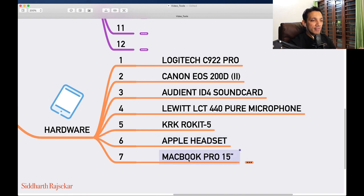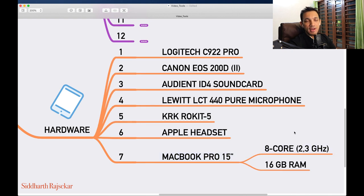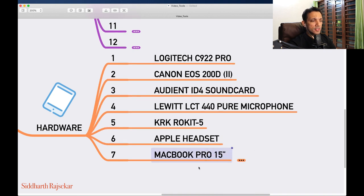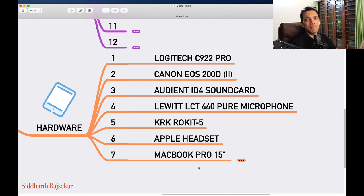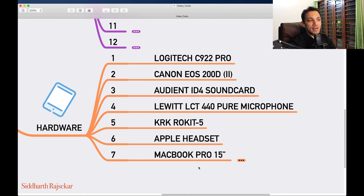The machine I'm using right now is a MacBook Pro 15-inch — eight-core, 2.3 GHz, 16 GB RAM. I'm planning to upgrade to the iMac Pro, which is a monster of a machine, because I'm planning to do a lot more videos and editing. This MacBook Pro is a workhorse — it can compete with an iMac Pro. If you're into any kind of serious content production, hands down MacBook Pro — there's nothing that can beat it. I've been using MacBook Pros for ages.